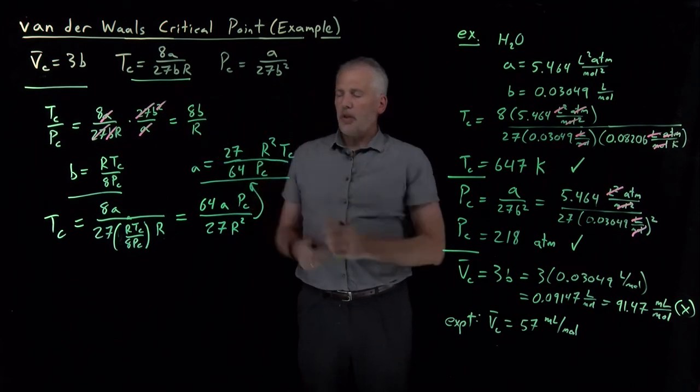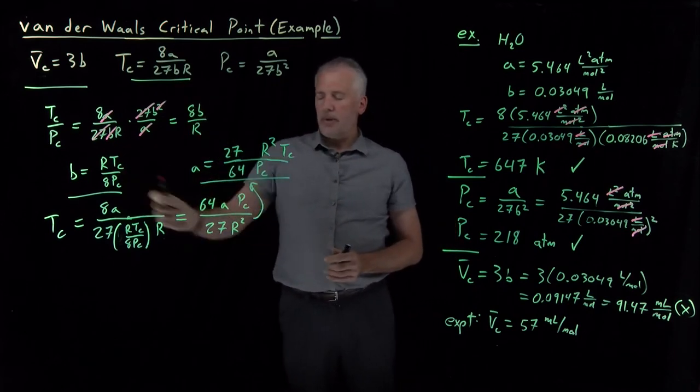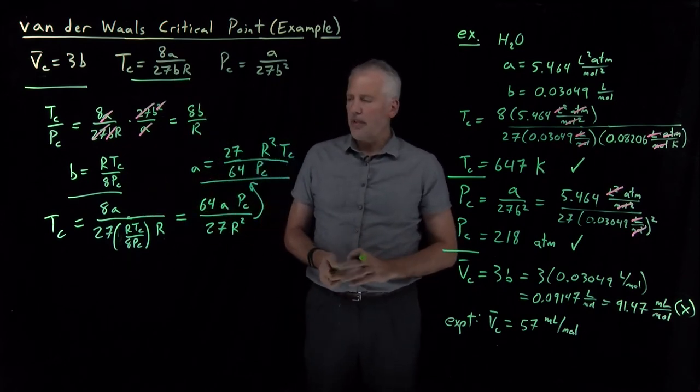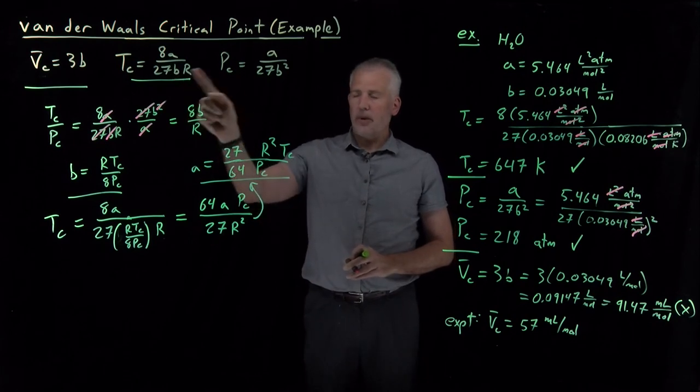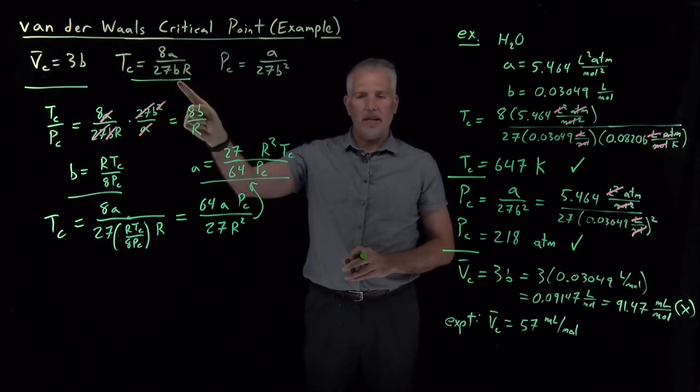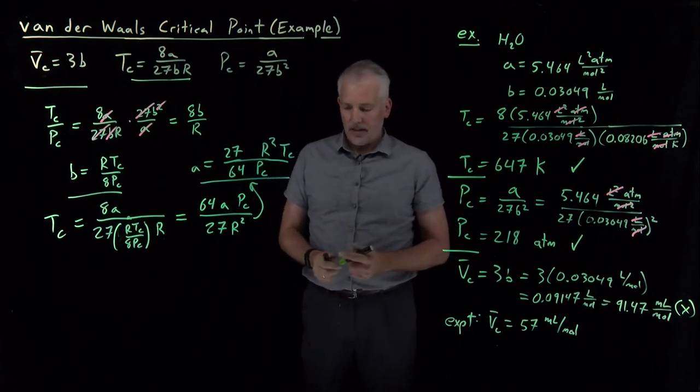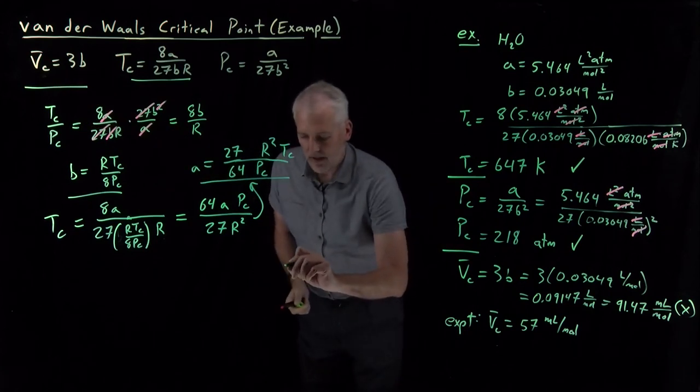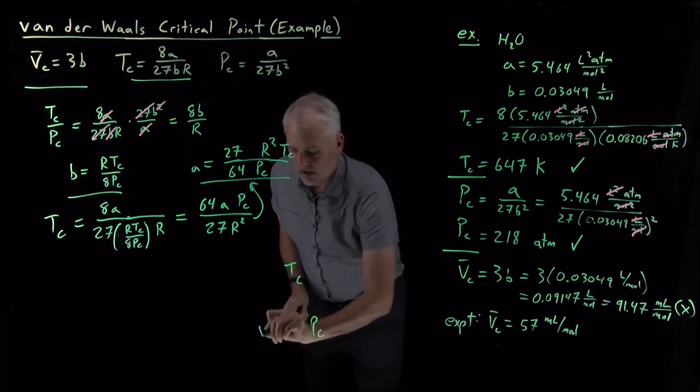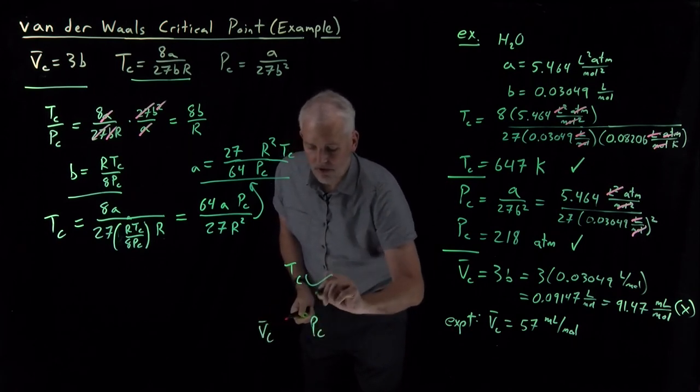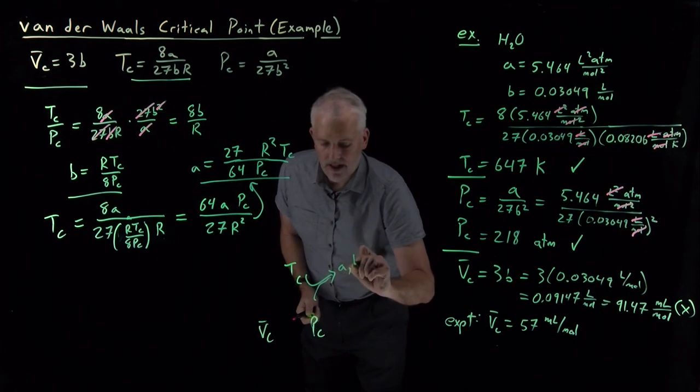So if I know these critical constants, I can solve for A and B. But notice what's just happened. I only needed two equations to solve for the two unknowns, A and B. I didn't use this expression at all. In fact, if I have a critical temperature, critical pressure, critical volume, I've just used these two to solve for A and B.